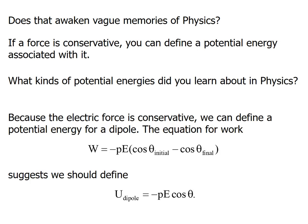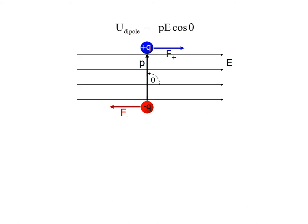So the work done equals minus PE cos theta initial minus cos theta final. This depends on the initial and final angles if the dipole is free to rotate. To find the energy, we use the work done formula. So U dipole (the energy) equals minus PE cos theta. This is how we formulate the energy from the work done. This is the formula if it has rotated.